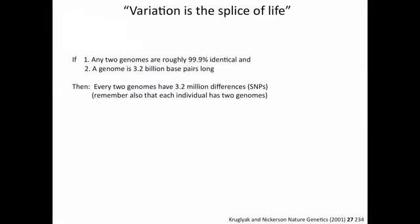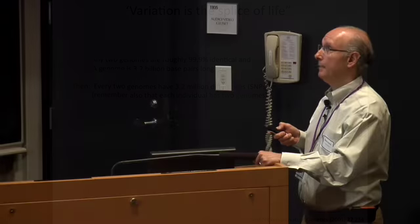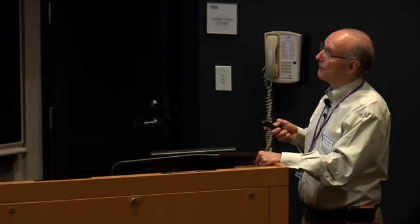Variation is indeed the spice of life. If any two genomes are roughly 99.9% identical and a genome comprises 3.2 billion bases, then every two genomes will have 3.2 million differences — and this is per haploid genome, so we have two copies. This is a tremendous amount of difference between any two genomes, and this is only considering single nucleotide polymorphisms — only part of the variation that we harbor.